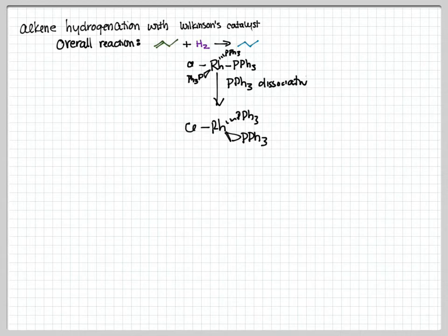The compound that we called Wilkinson's catalyst before might better be called Wilkinson's pre-catalyst because the first thing that has to happen is we have to get the catalyst ready. Now, once we've lost that phosphine ligand, we can start the catalytic cycle.